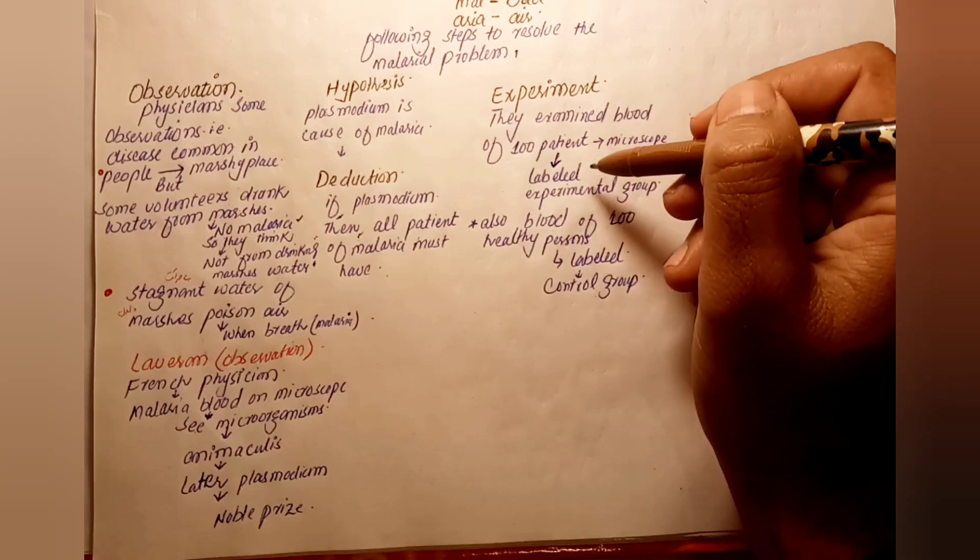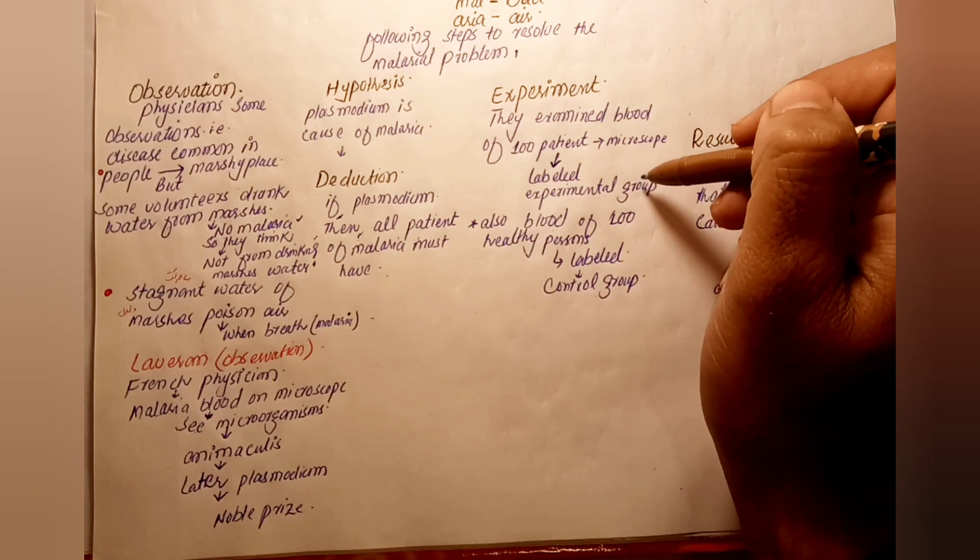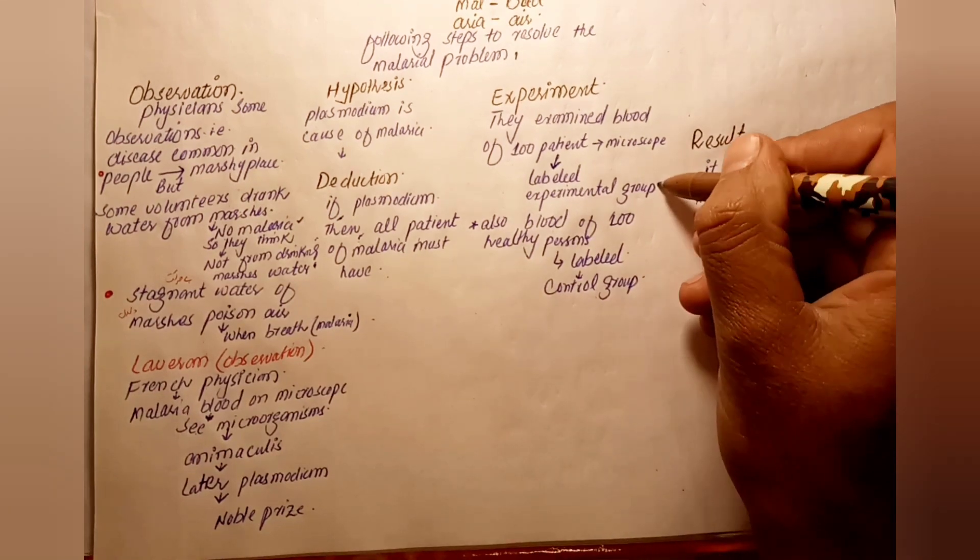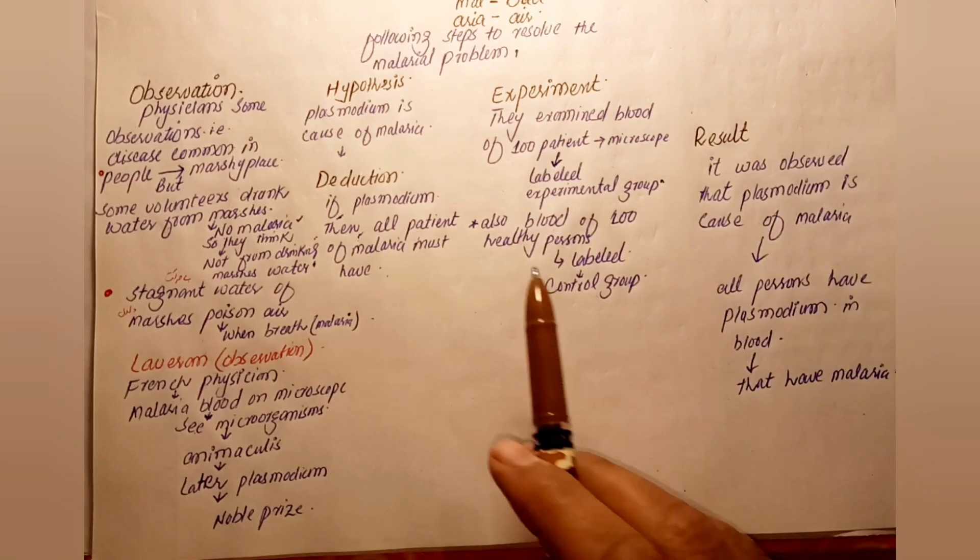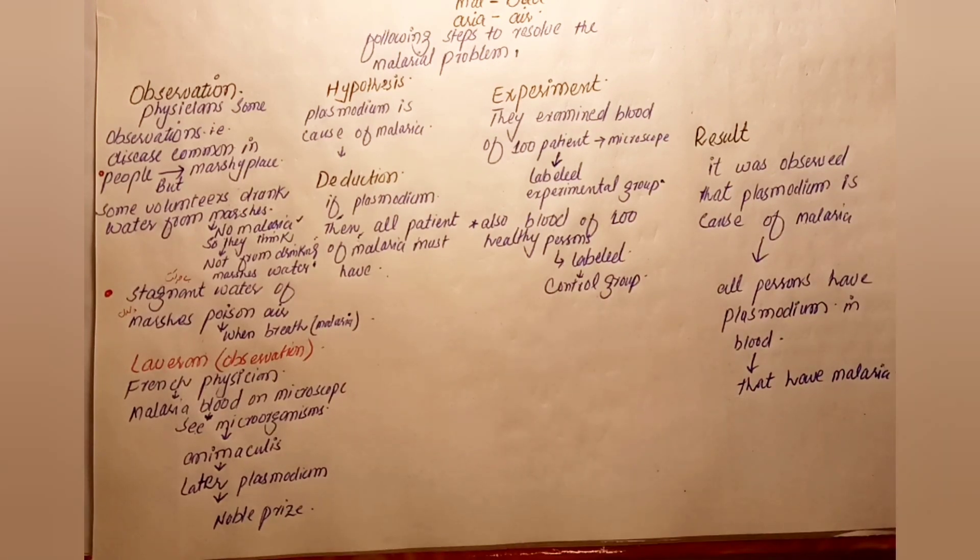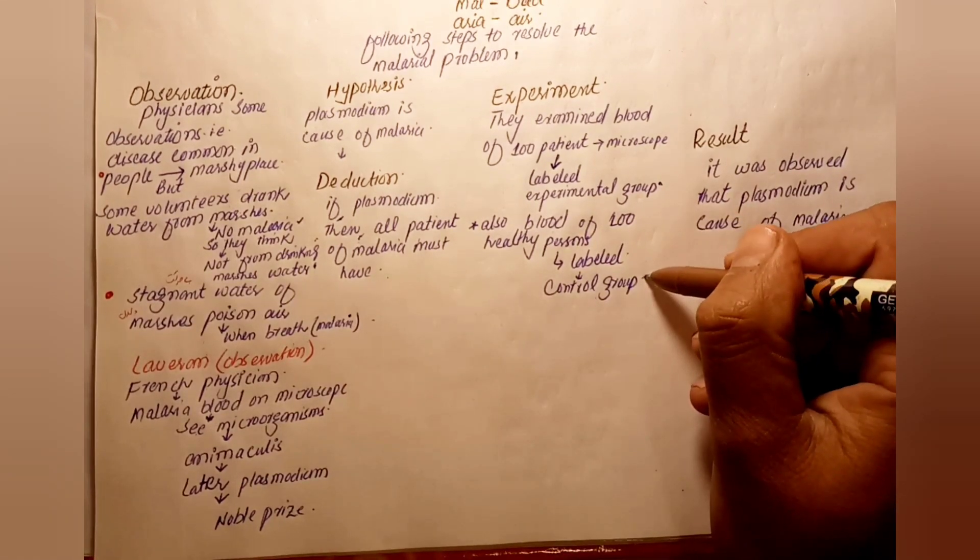This was labeled the experimental group. Additionally, blood from 100 healthy persons was examined, which served as the control group.